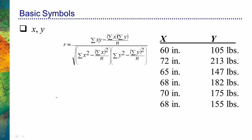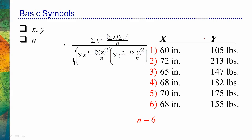Another thing that we see oftentimes in statistical equations is n. And n just represents the number of data points that we have for a particular variable. For example, we can see that we have one person who was 60 inches, the next person measured was 72 inches, and so forth. In this particular case, we have six data points for the x variable and also six data points for the y variable. So our n equals 6.